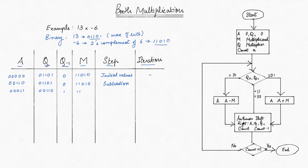Next, we perform a right shift through A, Q, and Q-1. We have now completed one iteration of the algorithm.